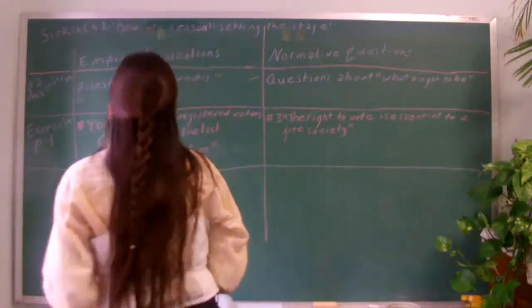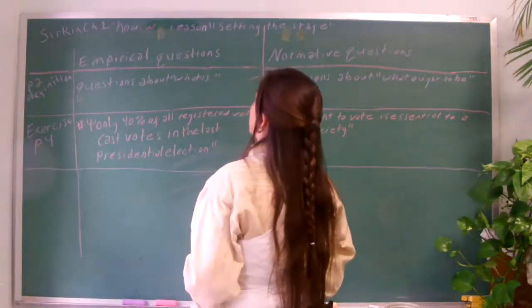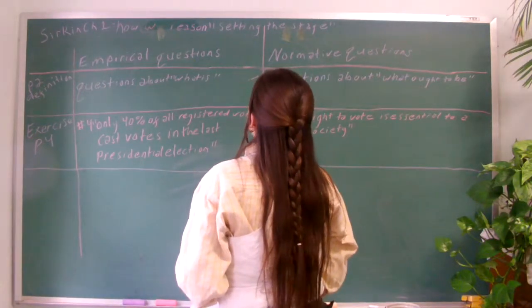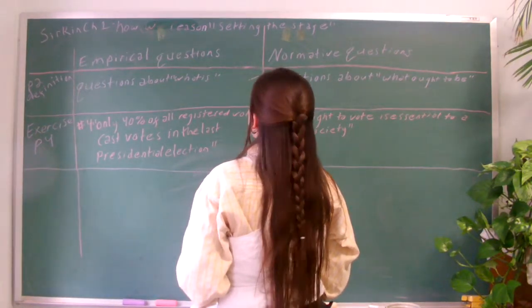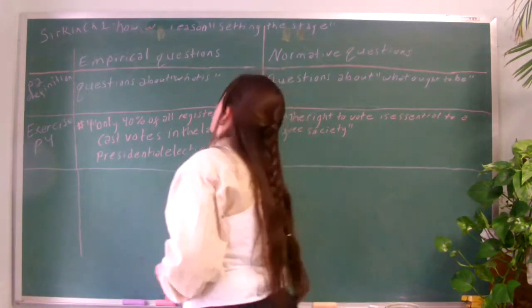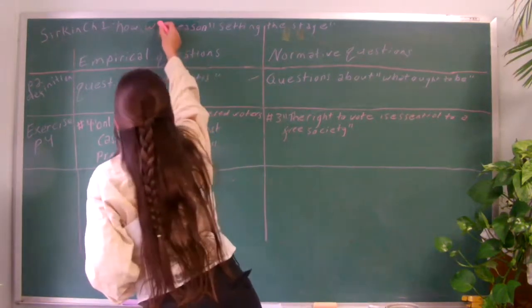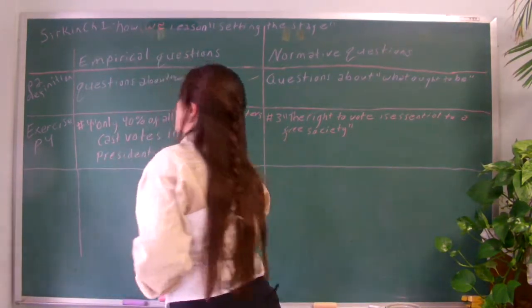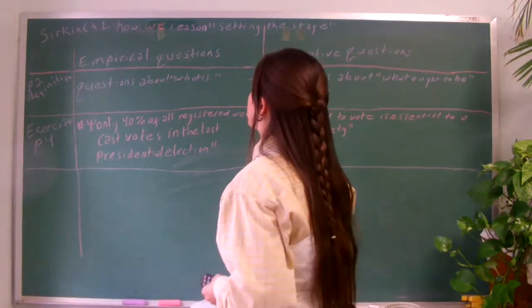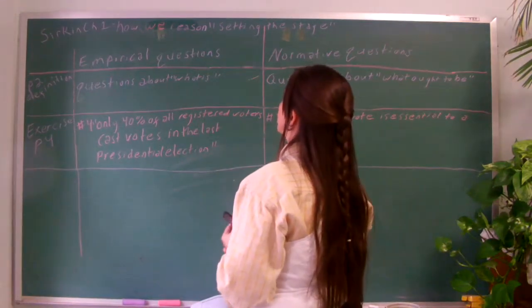Hello, this is Sirkin Chapter 1. Please turn to page 2 of your textbook. This one is called How We Reasoned Setting the Stage. That's why we double-check our work. Well, actually I intentionally left the E out, but I'm trying to make a point. When you do this, double-check your assignments before you submit them. It's very important.